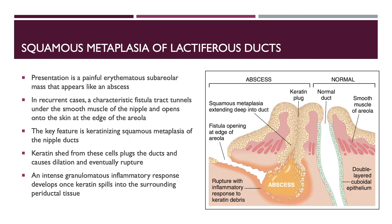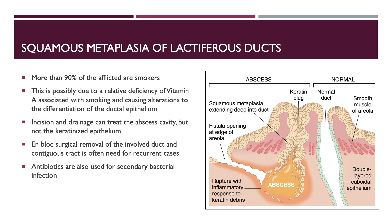On the right, you can see a normal nipple duct with the double-layered cuboidal epithelium. On the left, where the abscess is, you can see the squamous metaplasia extending deep into the duct. Keratin shed from these cells plugs the ducts and causes dilation and eventual rupture. An intense granulomatous inflammatory response develops once keratin spills into the surrounding perioductal tissue. Interestingly, more than 90% of the afflicted people are smokers, possibly due to a relative deficiency of vitamin A associated with smoking, causing alterations to the differentiation of the ductal epithelium.